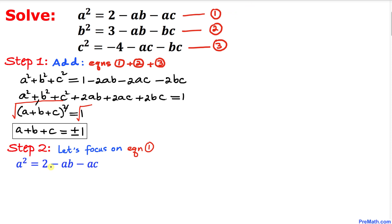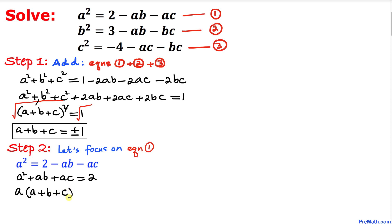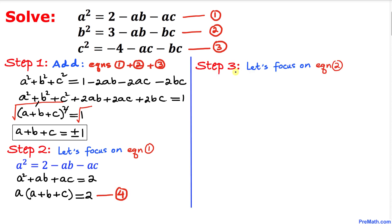Now let's focus on equation 1. Moving negative ab and negative ac to the left hand side, we can see that a can be factored out, giving us a(a + b + c) = 2. Let's call this equation number 4.